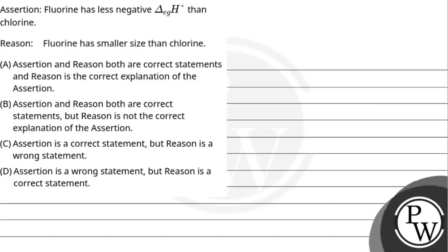Hello, let's see the question. The question says the assertion is fluorine has less negative electron gain enthalpy than chlorine, and the reason is fluorine has smaller size than chlorine.